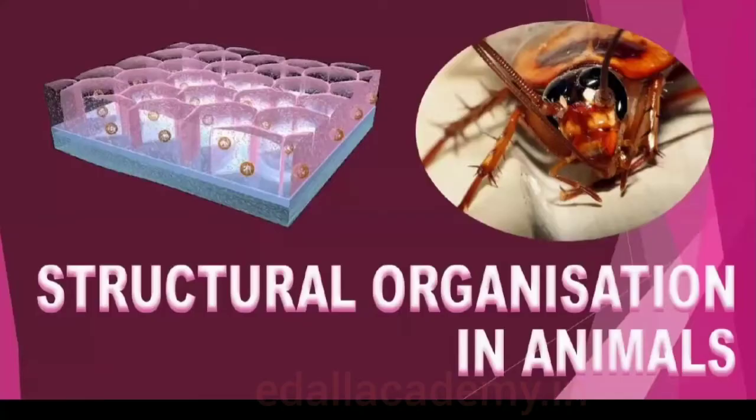Chapter 7: Structural Organization in Animals. Topics to be covered are 7.1 Animal Tissues, 7.2 Organ and Organ System of Cockroaches. Let's begin with the introduction.